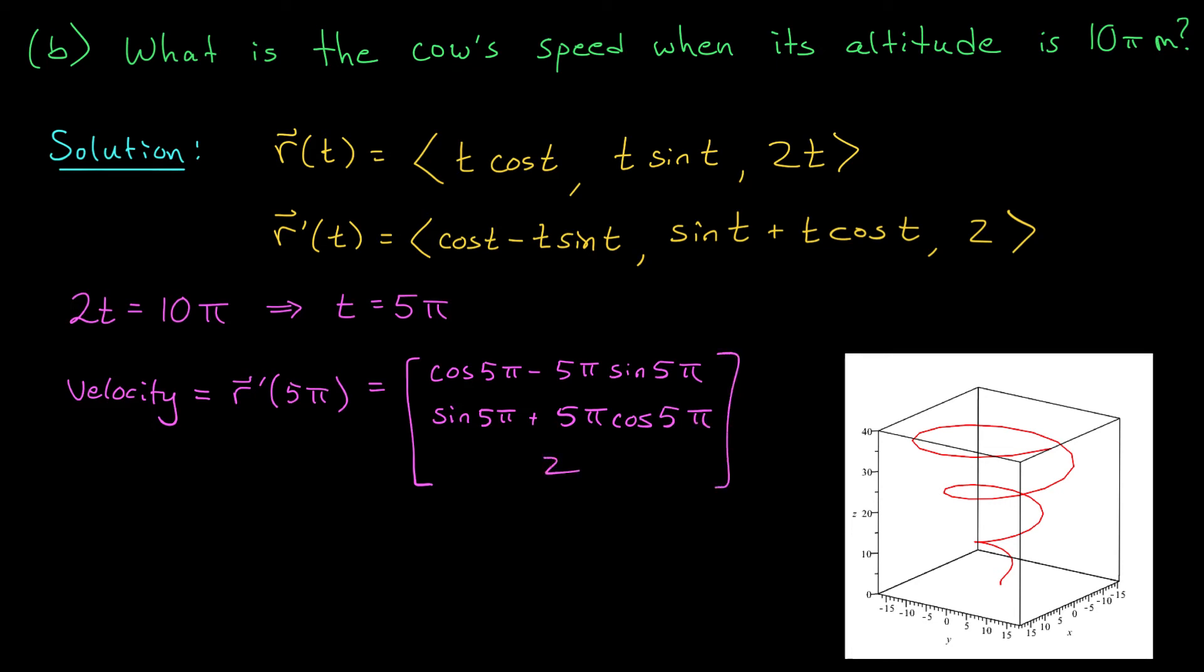Now, ultimately, we want to take the norm of this vector to find the cow's speed. But first, I think we should try to clean it up a bit. We know that cos of 5 pi is minus 1, and sine of 5 pi is 0. So we can actually throw out these two terms and replace all of our cosines with minus 1. Its velocity vector is therefore given by minus 1, minus 5 pi, and 2.